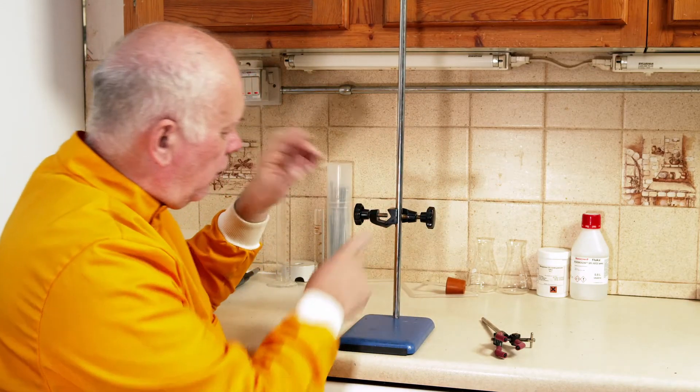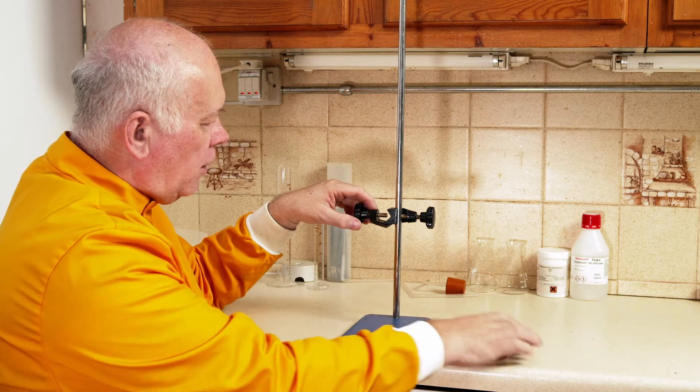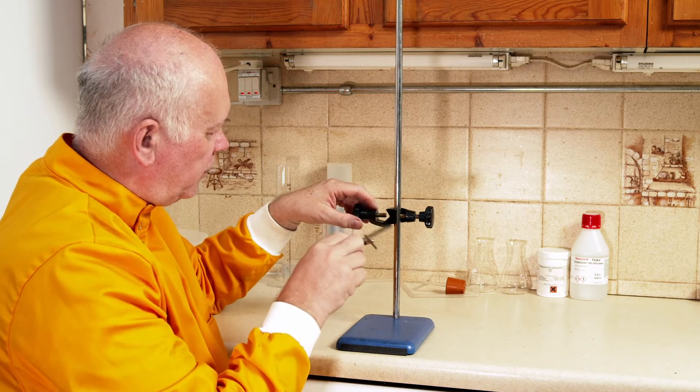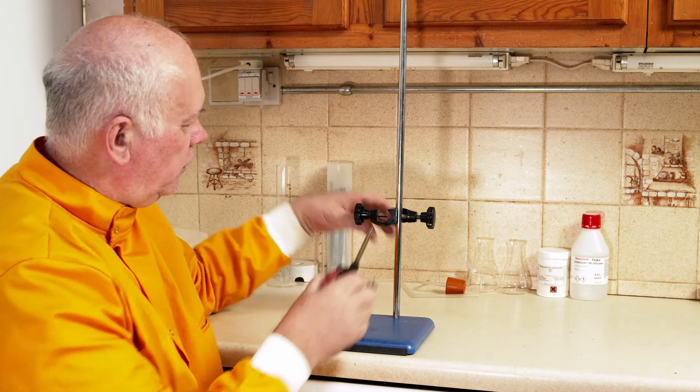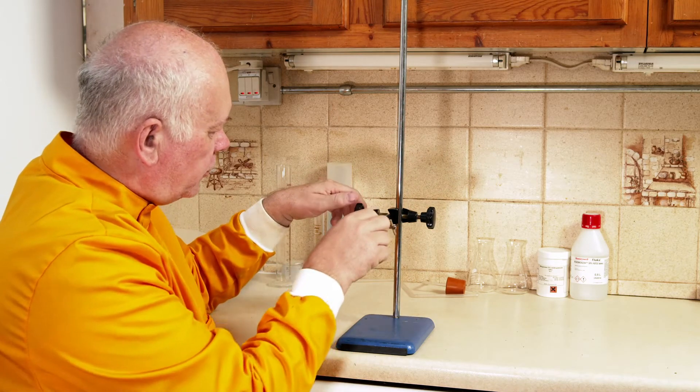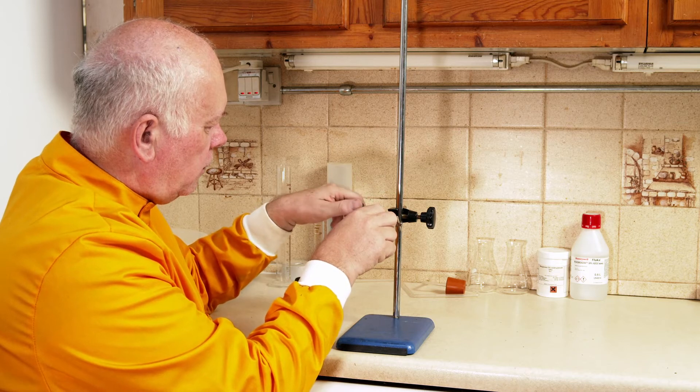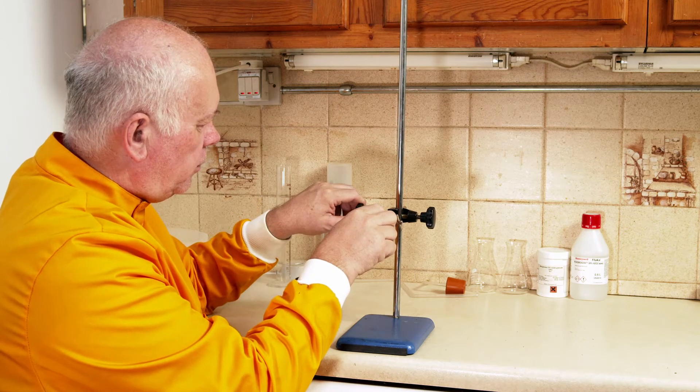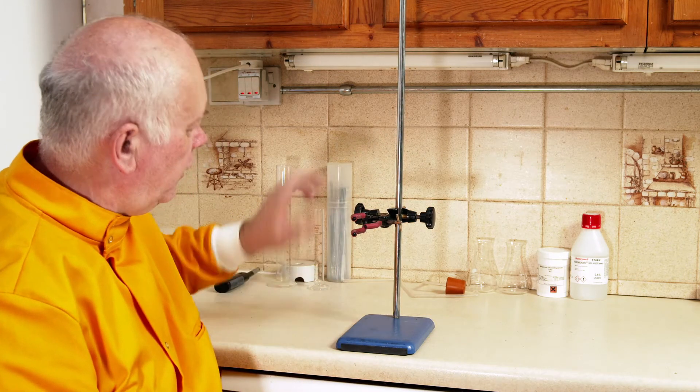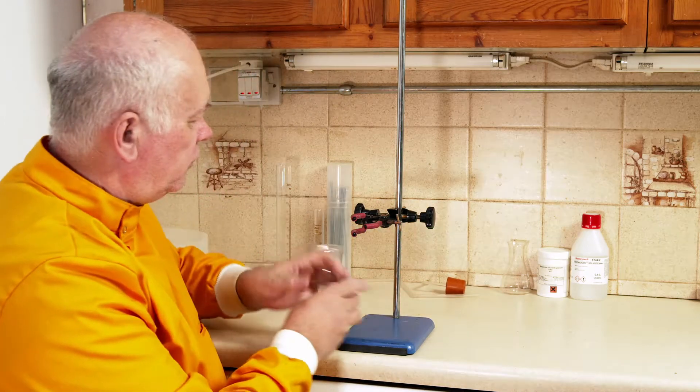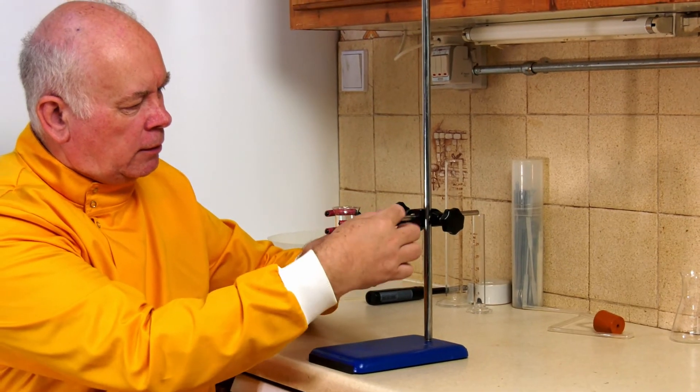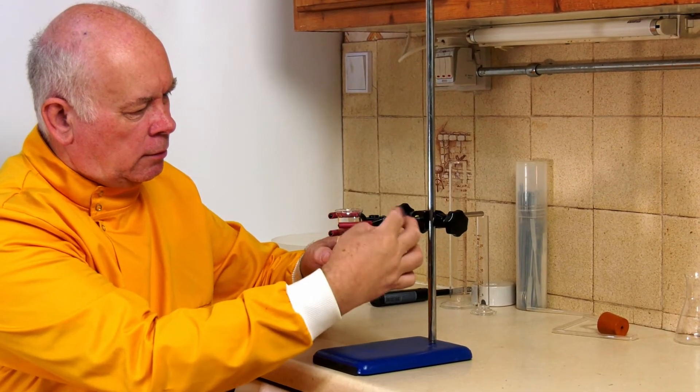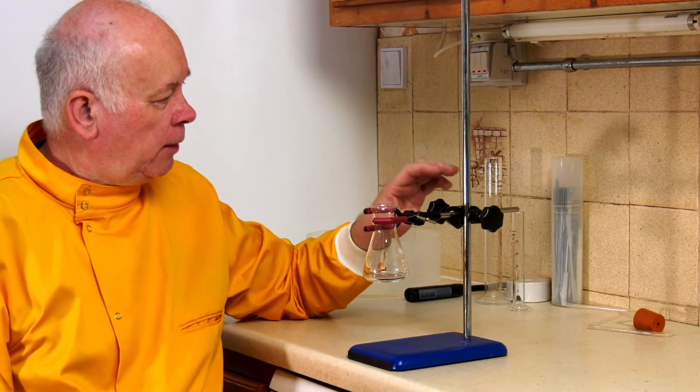And the other side is going to be with this metal piece at the bottom, and what that does is give security. So we can now push this in, tighten this one up, and there we have our clamp set up so that if I want to I can clamp in that conical flask for instance, and there we have it all set up ready to go.